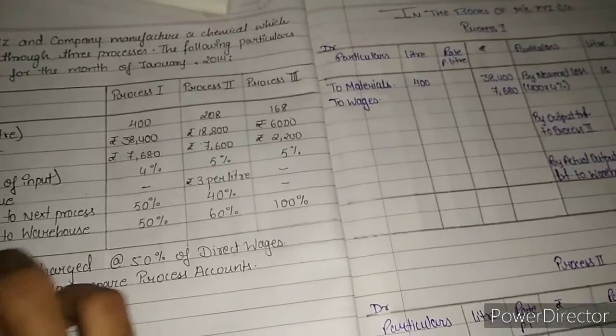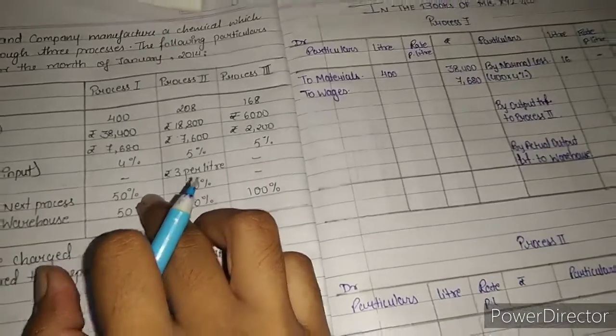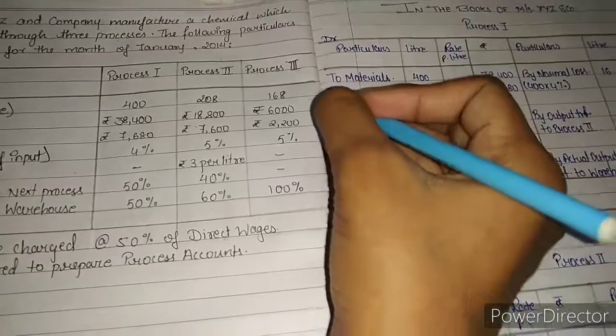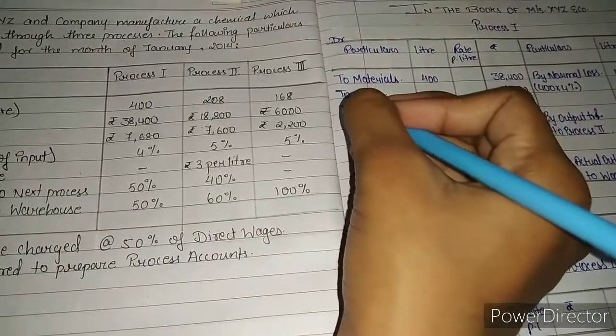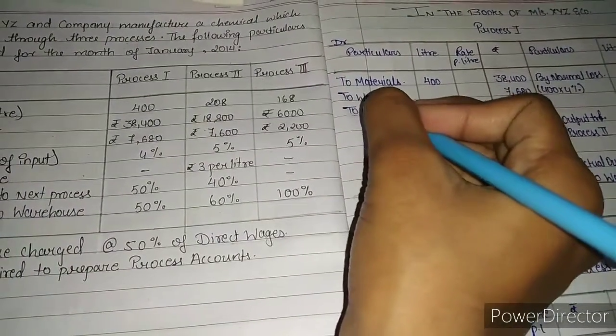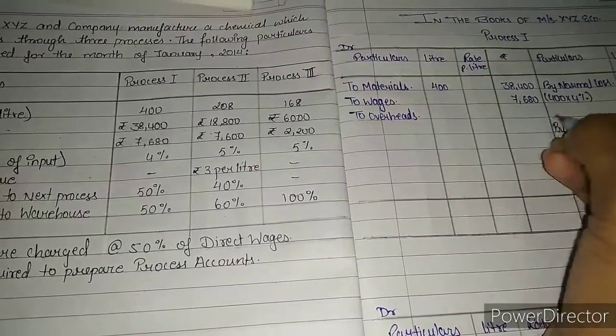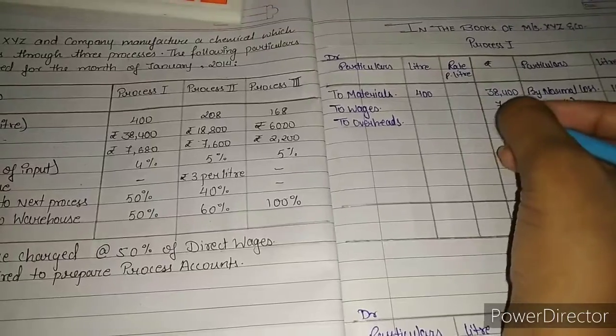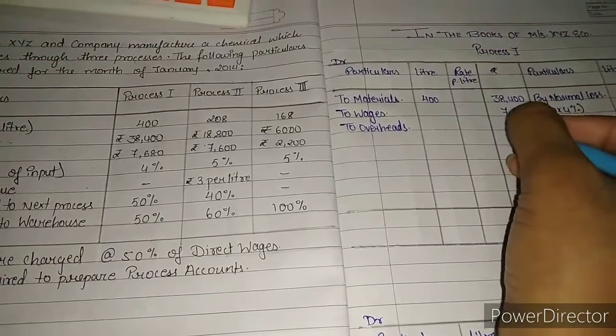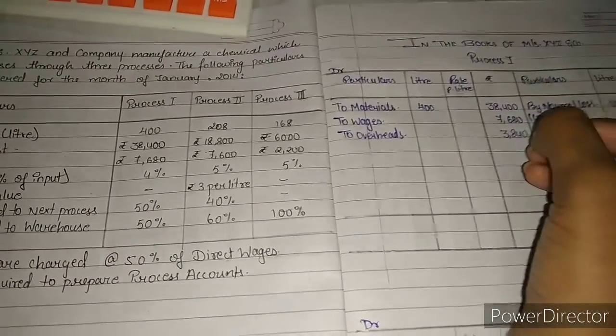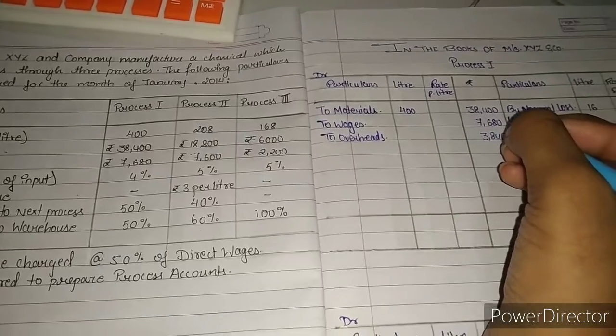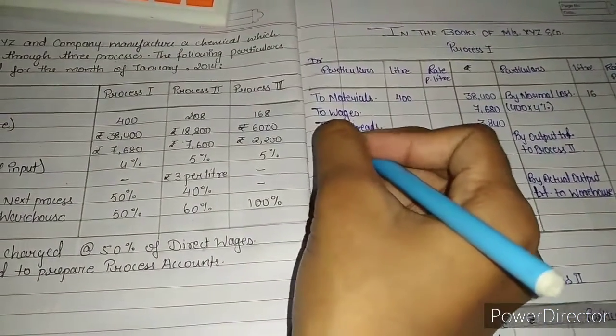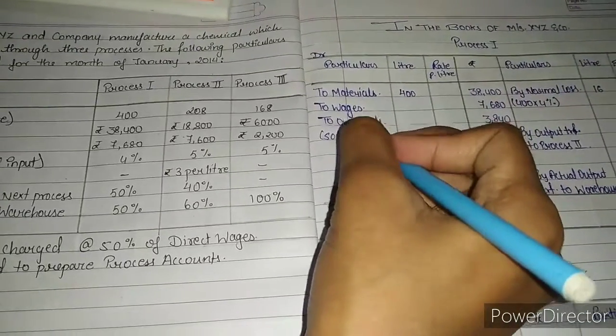The overheads are 50% of wages. 50% of 7,680 equals 3,840. You can calculate and check it. Let me write this here.